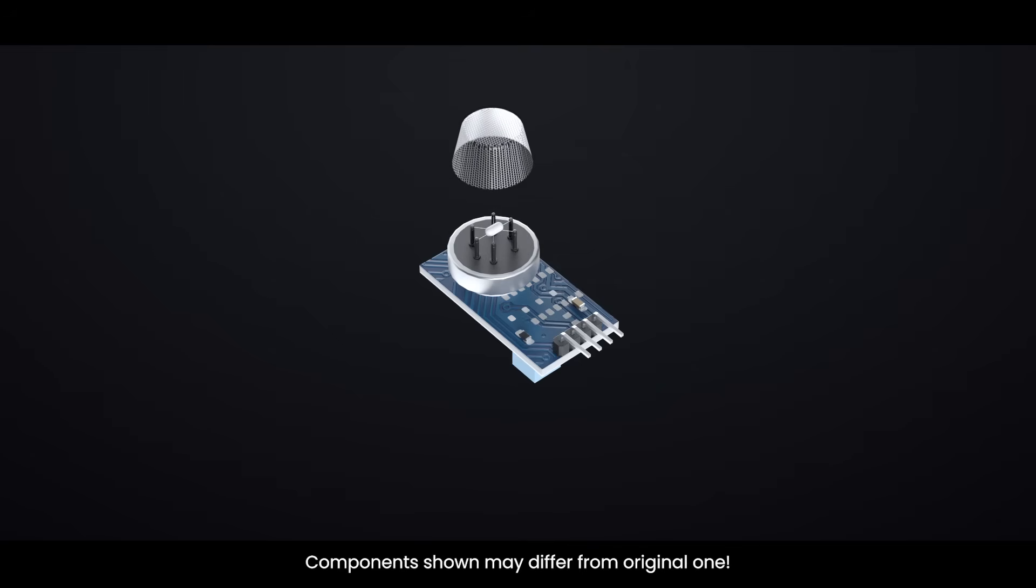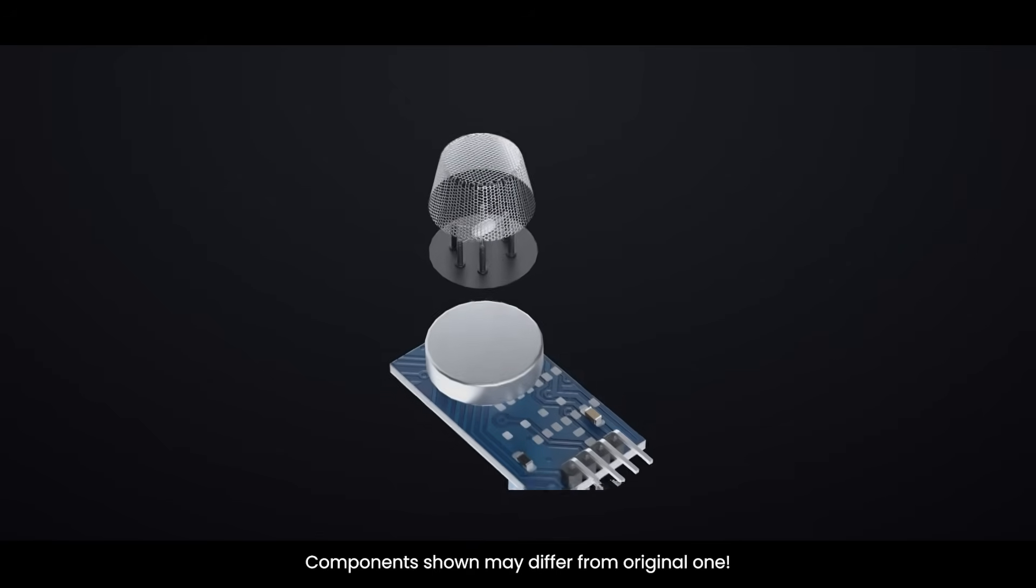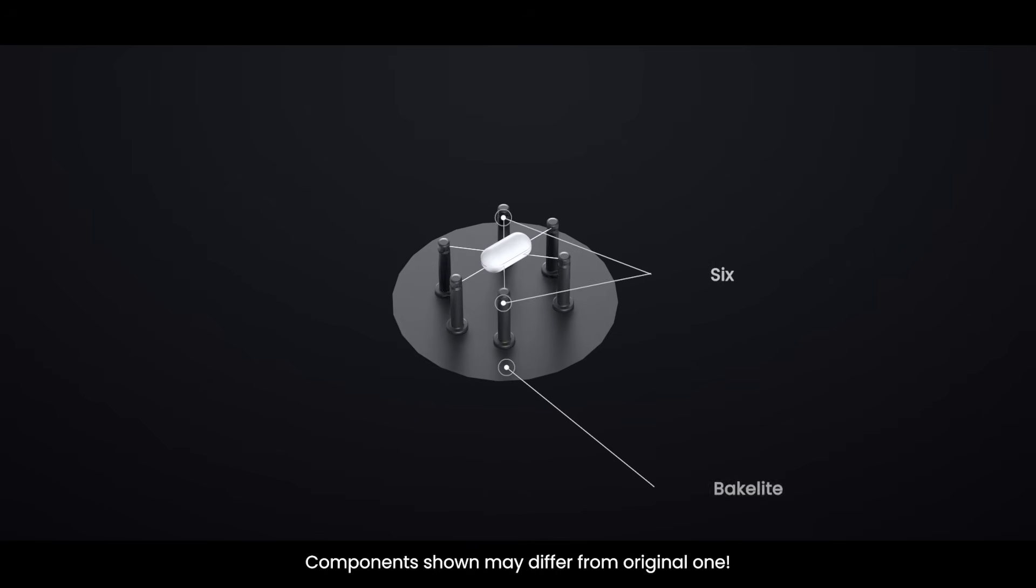If you carefully remove the outer mesh, you can see the inside of the sensor. At its heart is a sensing element attached to six metal legs that stick out from a round base made of Bakelite, a type of hard plastic. These legs are arranged in a star pattern.